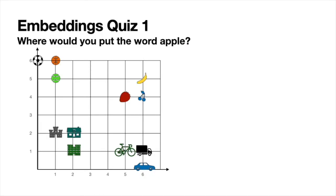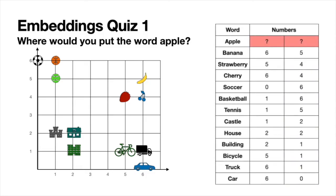Let's start with a quiz. What you see here is a simple word embedding — a bunch of words located in a plane, each one with its own coordinates. For example, the word 'banana' has coordinate (6, 5) because starting from the origin, the point with coordinate (0, 0), you move six steps to the right and five steps up.